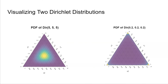From these visualizations of the Dirichlet distribution, we see that having a Dirichlet parameter alpha with each component larger than one results in most of the distribution's mass being in the center of the simplex.